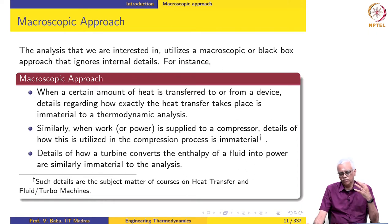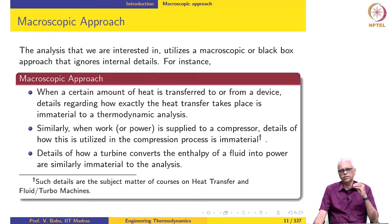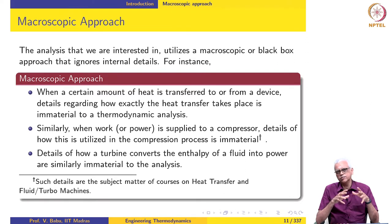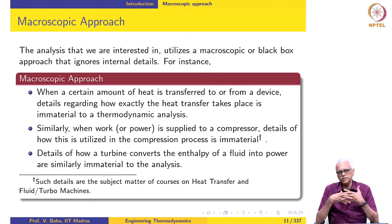Similarly, when we say that a certain amount of work or power is supplied to a device — let us say to a compressor — we do not really bother about whether the compressor is a centrifugal, axial flow, or reciprocating compressor. We simply say that a certain amount of power is transferred to the device and that is used for compressing a certain amount of air, either a certain quantity or with a certain mass flow rate. We do not worry about the internal details of how the work transferred to the compressor is actually realized in the form of increased pressure.